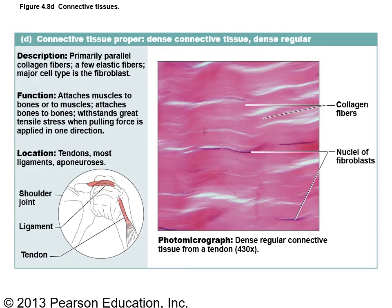Dense regular connective tissue, under the dense subcategory, has very few cells and a large number of collagen fibers all running in the same direction, giving it high tensile strength — it resists pull and looks like a rope. This is where you find tendons, which attach muscle to bone, and ligaments, which attach bone to bone. It's very strong tissue.